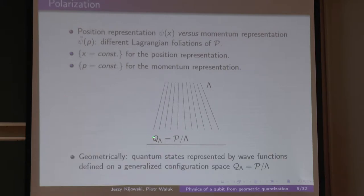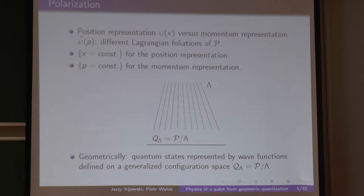The quotient space — the space of those leaves — plays the role of the configuration space. So the first idea in geometric quantization is that quantum states have to be represented by wave functions defined on this generalized configuration space. But immediately a problem arises: the Galilei transformation.